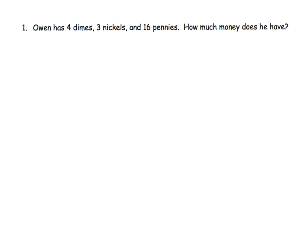Here we have Owen and he has four dimes, three nickels, and 16 pennies. How much money does he have? In the previous lesson video we were told to add these coins from the greatest to the least, and we're going to kind of add to that strategy. What we're going to do is label these, and we're not going to use actual coins — this time we're going to use representations.